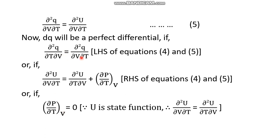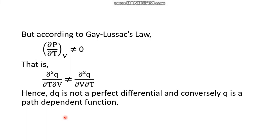But is (∂p/∂T)_V equal to zero? If volume is kept constant and temperature is increased, would pressure remain constant or change? It is easy to say that pressure would increase — pressure and temperature are directly proportional when volume is kept constant. This is Gay-Lussac's law. According to Gay-Lussac's law, (∂p/∂T)_V is not equal to zero. This means the left-hand sides of equations four and five are not equal.